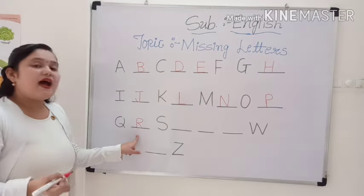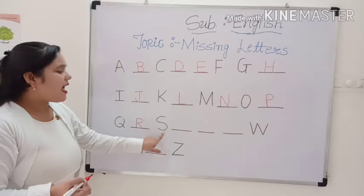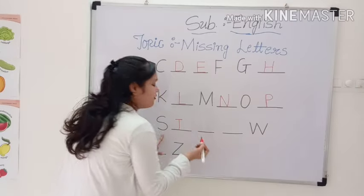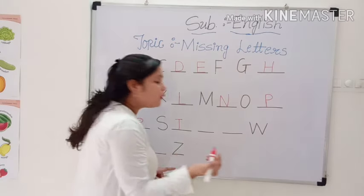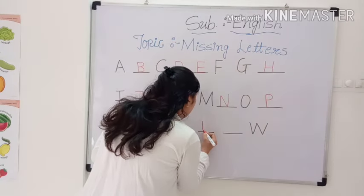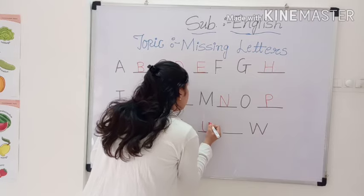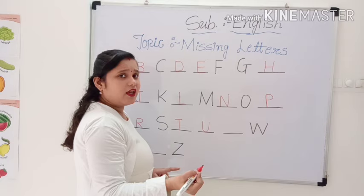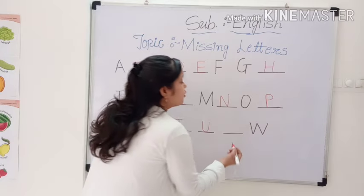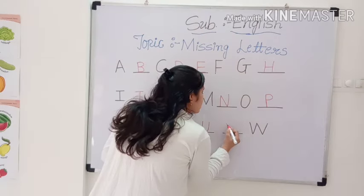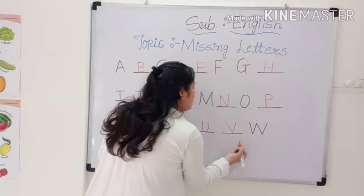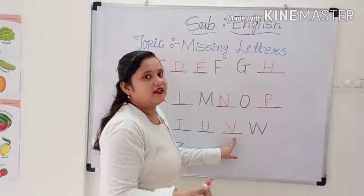R, R, R, S. Now, T. After that, which letter comes? U. Very good. After that, V. V. How to write V? Slanting line. Another slanting line. Makes capital letter V.